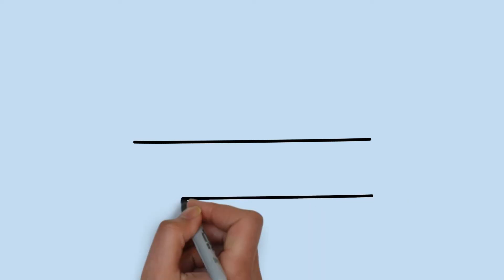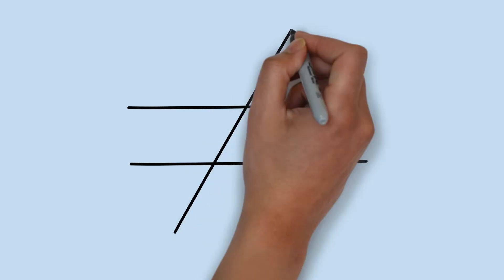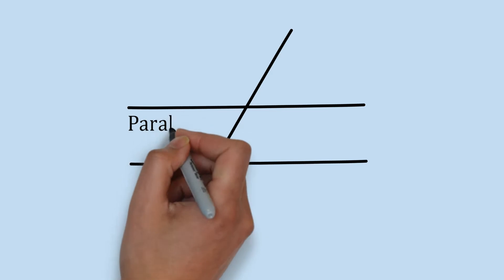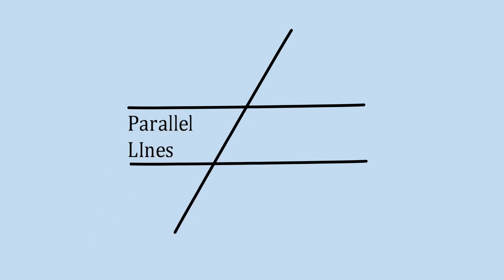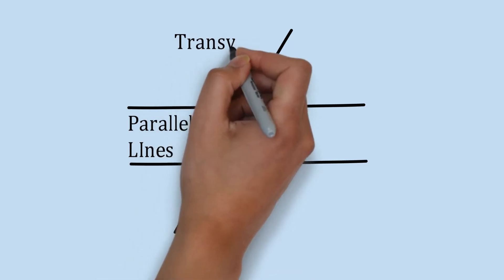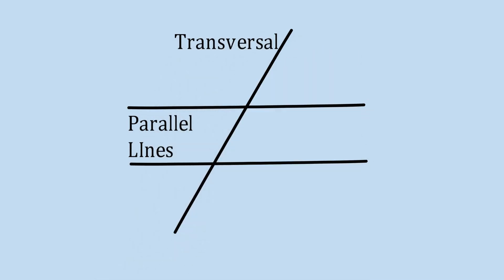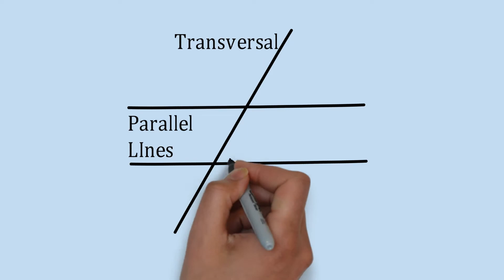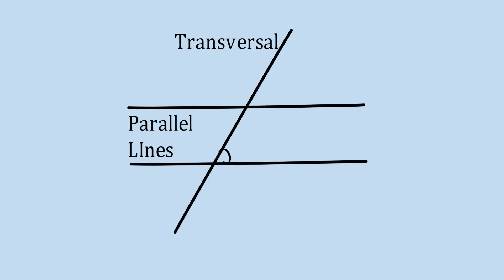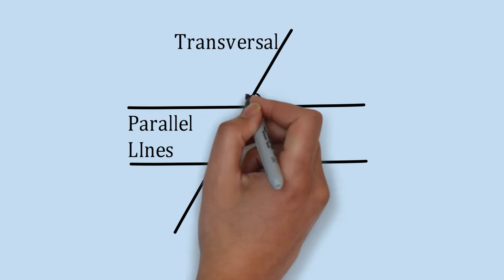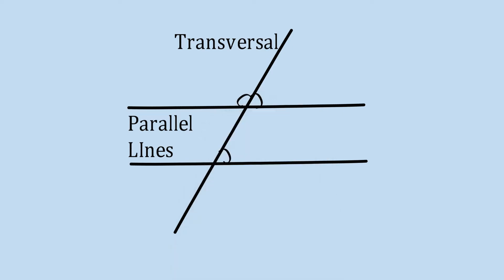Here are two parallel lines being drawn in front of you, and a line cutting through both the parallel lines. The line that is cutting through is known as a transversal. And then we have the different angles that are being formed as a result of the transversal cutting through the parallel lines.